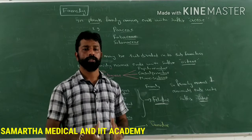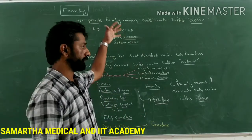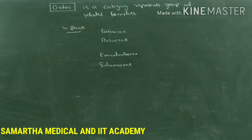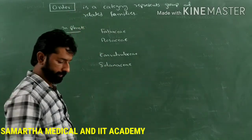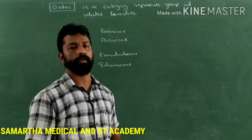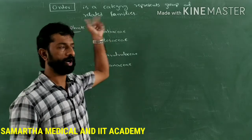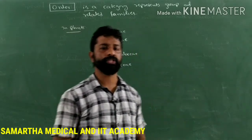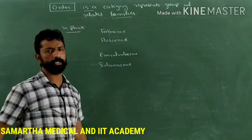Till this class we have discussed species, genus, and family. Make a note. The next category in taxonomical arrangement is order. Order is a higher category than family. Order is a taxonomic category which represents a group of closely related families, where similarities are present between individuals of one family and individuals of other families.